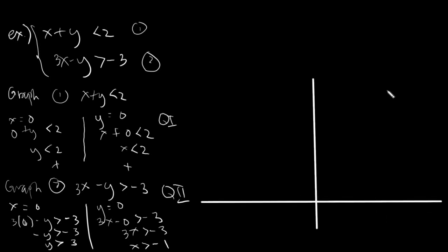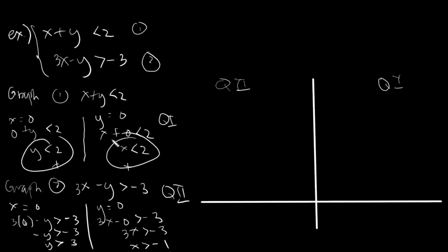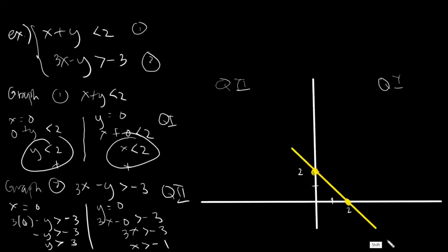So we have our Cartesian plane covering quadrant one and quadrant two. We'll graph our given based on the values: y is 2 on the first equation, so we mark 1, 2 — this is 2. And x is also 2 — 1, 2. We will plot the first line using a yellow marker. So we'll mark yellow here, then yellow here, and simply connect the points.